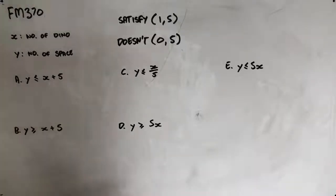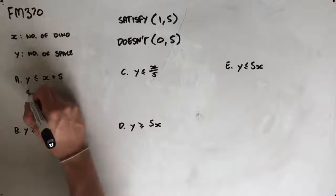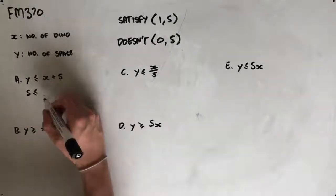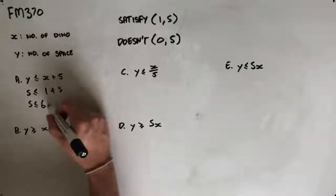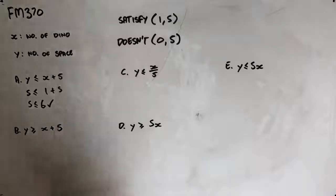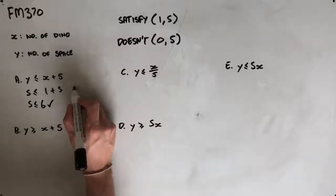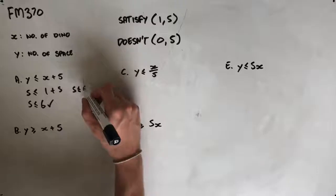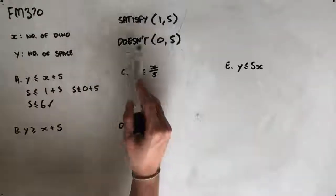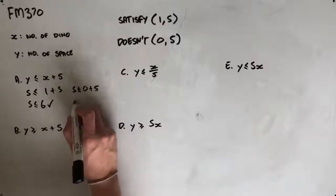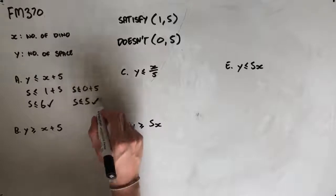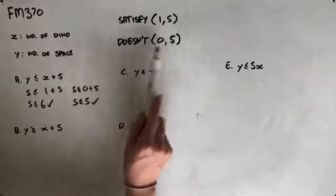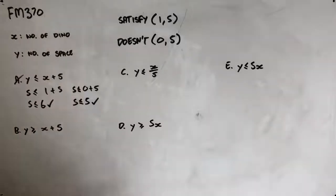For option A, inserting our values we get five is less than or equal to one plus five, which means five is less than or equal to six. That satisfies the inequality, so looking good so far. But inserting the condition that shouldn't satisfy, we get five is less than or equal to zero plus five, so five is less than or equal to five, which also satisfies the inequality when it shouldn't. So A is not our correct answer.